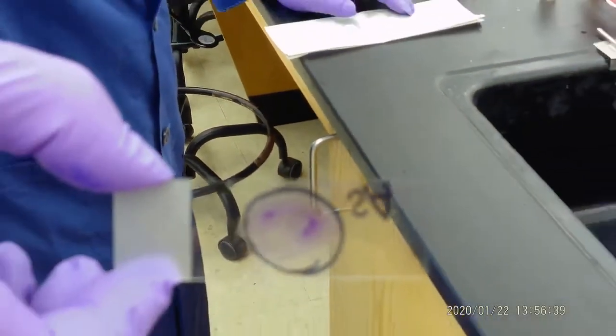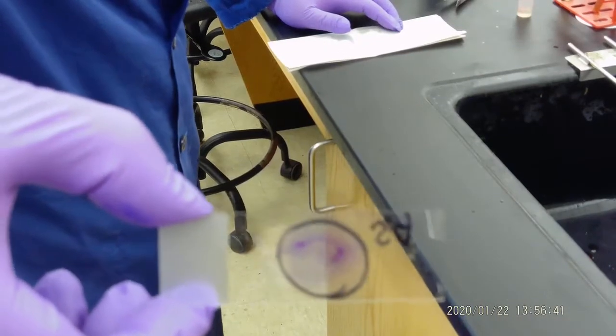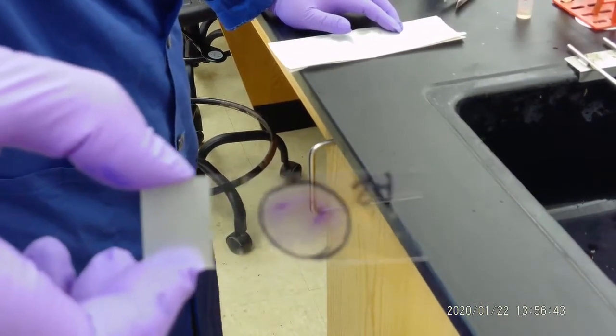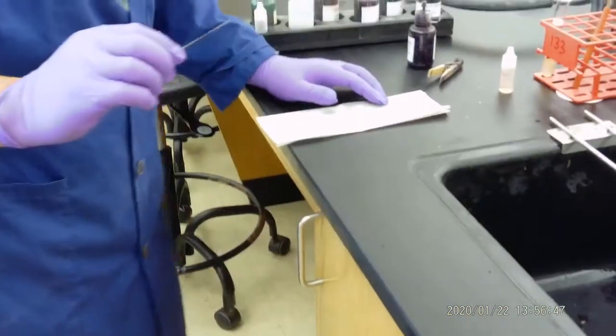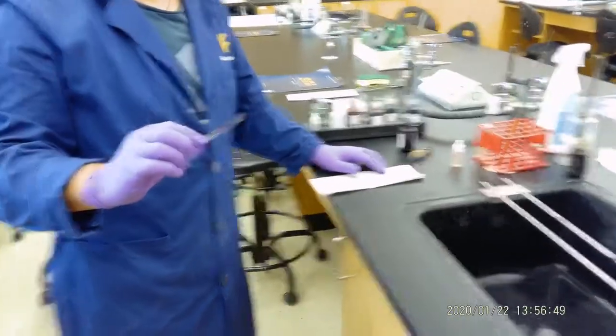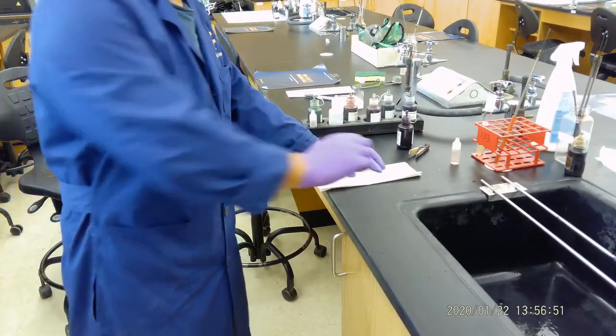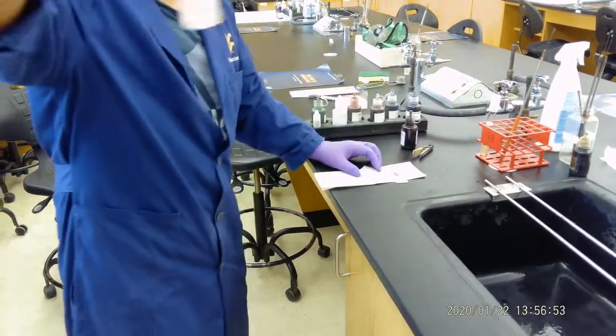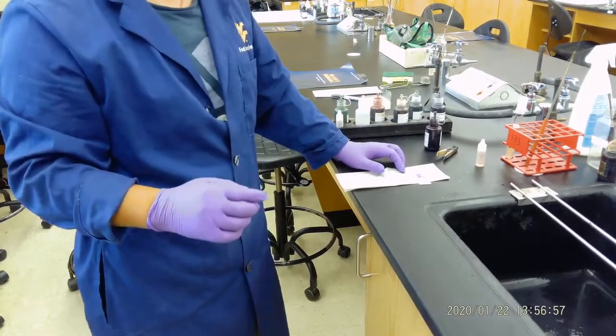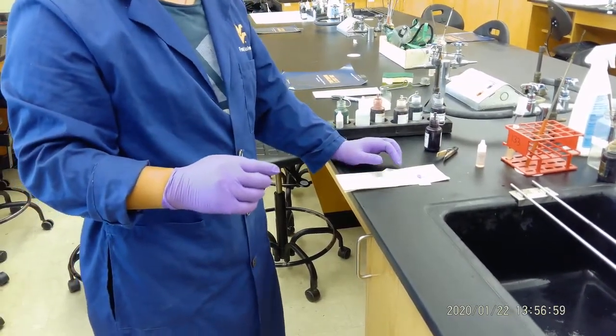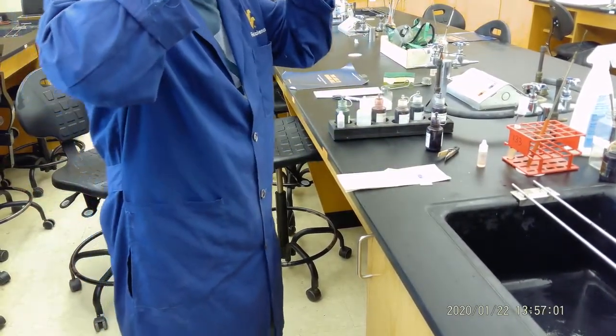Now, for simple stain, we want to see the shape, morphology of the bacteria and the arrangement. So this glass slide, we will do the observation under 10x and use oil immersion. Using the oil immersion, we will do further observation under 100x. That's all I have for the simple stain.